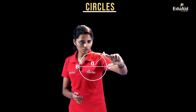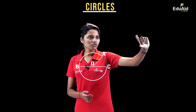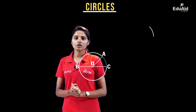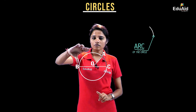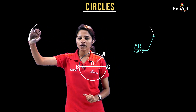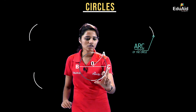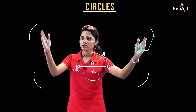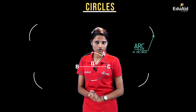This curved portion of the closed line is known as the arc of the circle. Any portion of the curved line — this, this, this — they are all arcs of this circle.